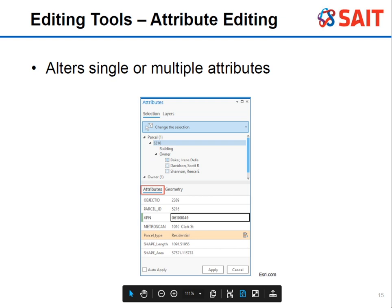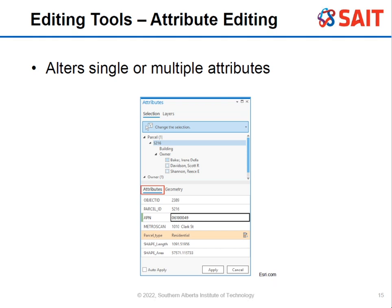There's also attribute editing. You can go in and actually change your attributes. This is really helpful if there's an error or if something has changed — for basic maintenance, you can do multiple attributes as well. It keeps your data clean and up to date.